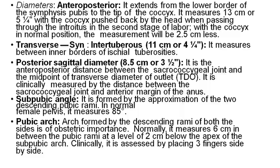The axis direction is downward and forward. Diameters: Anteroposterior extends from the lower border of the symphysis pubis to the tip of the coccyx, measuring 13 cm — with the coccyx pushed back when the head is passing through the introitus in the second stage of labor. Transverse (intertuberous) measures between the inner borders of the ischial tuberosities. Posterior sagittal diameter is the anteroposterior distance between the sacrococcygeal joint and the midpoint of the transverse diameter of the outlet; it is clinically measured as the distance between the sacrococcygeal joint and the anterior margin of the anus.